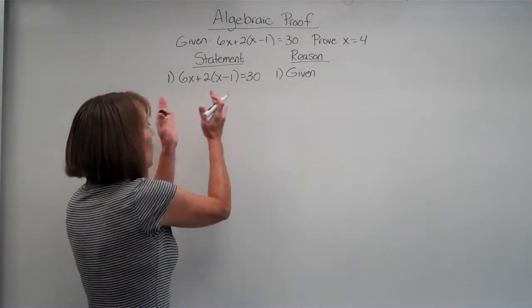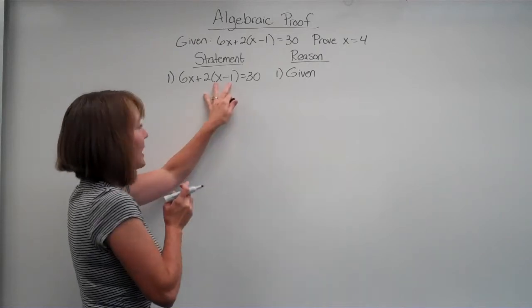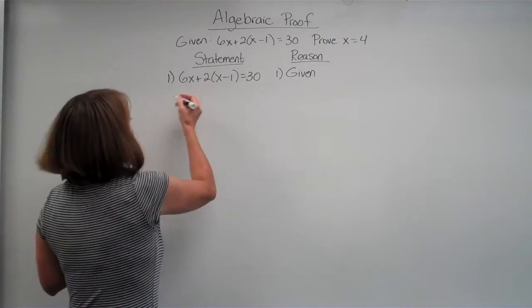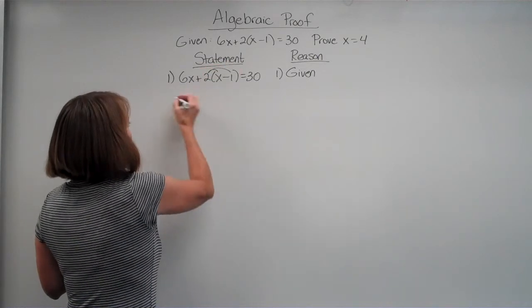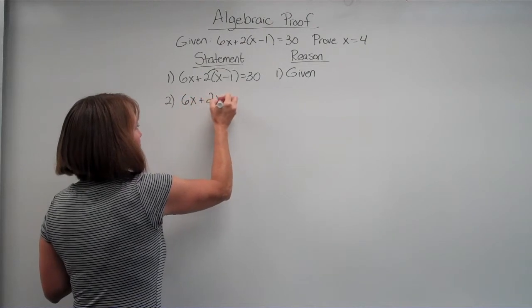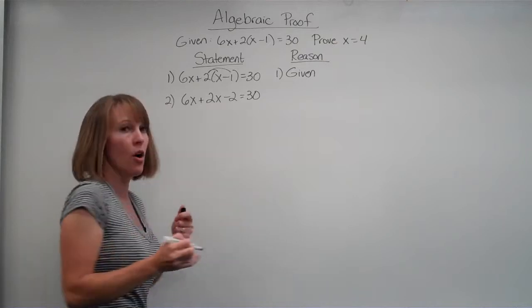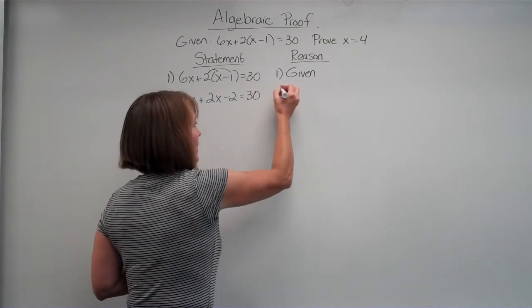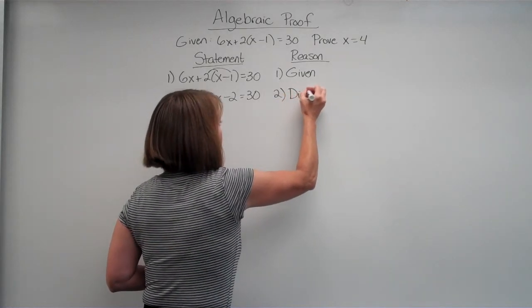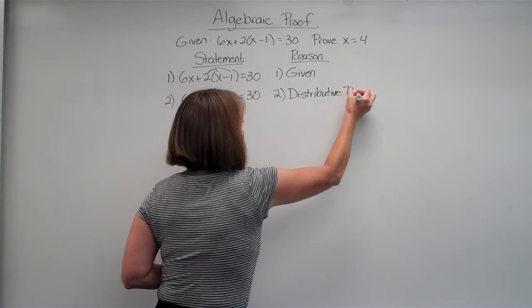Alright, now we're going to look at this. I'm going to say, what would I do first to solve this problem? And you'd say, well, I've got to get rid of these parentheses, so what would you do? You would distribute. So I'm going to go bloop, bloop. I would have, in my next statement, 6x plus 2x minus 2 is equal to 30. Why can I do that? Well, I use the distributive property.